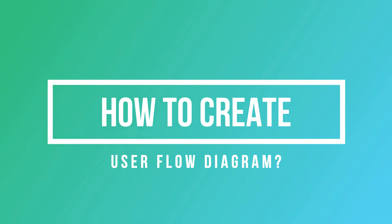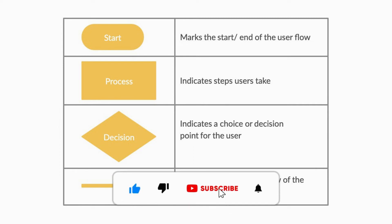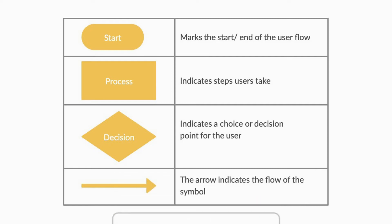So now let's see how to create a user flow diagram or a flowchart. Before we look at an example, let's look at the components a flow diagram consists of. The shapes in the flow diagram each have meaning. The rounded corner box means start or stop — it marks the start and end of the user flow. A typical rectangle indicates the steps, like step one, step two, step three. Wherever you see a diamond shape, it indicates a choice or decision point for the user. And the arrow indicates the flow direction — it can go right, up, bottom, or top.